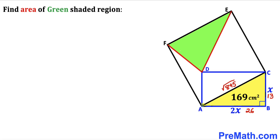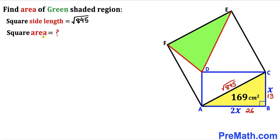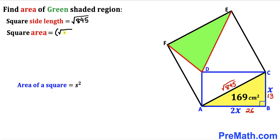We observe that AC is one of the side lengths of square ACEF, so the square's side length is the square root of 845. To find the area of square ACEF, we use: area equals S squared, where S is the side length. With side length equal to the square root of 845, the area of the square is the square root of 845 squared, which equals 845. This is equation number one.